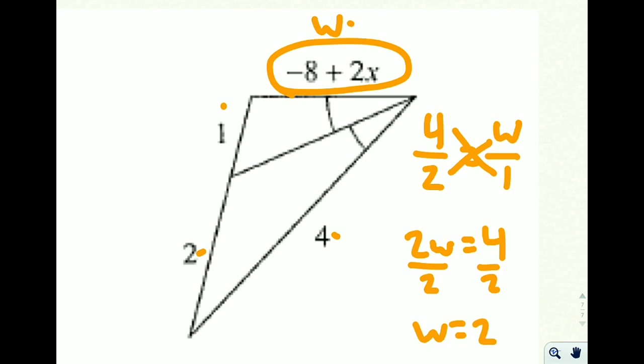Divide both sides by 2, and w equals 2. Now you're wondering, why are we doing this whole w business? Reason is, we now know that this whole side length here is 2.